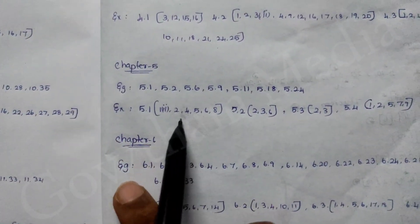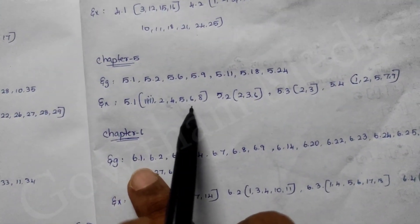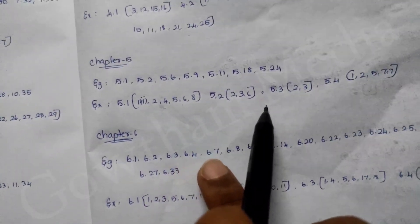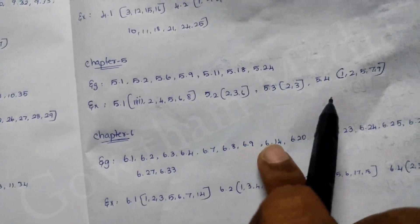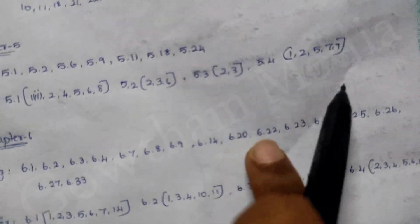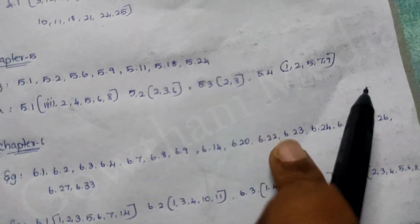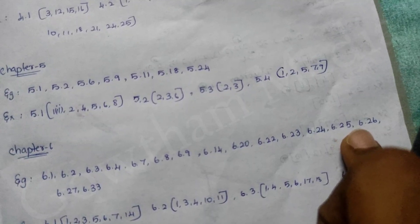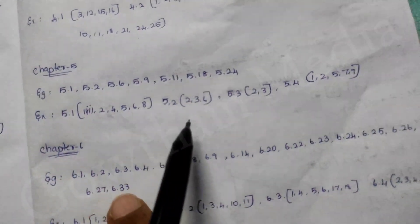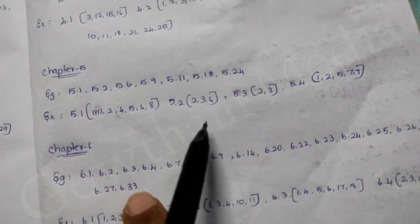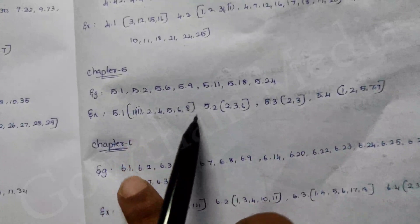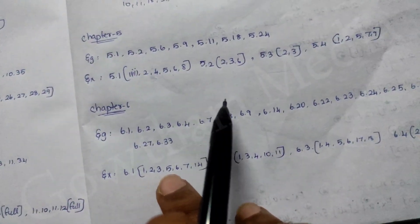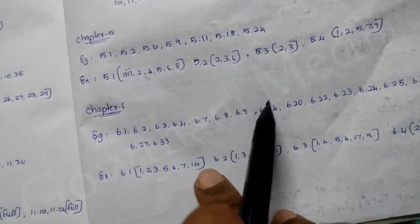Chapter 6. Examples: 6.1, 6.2, 6.3, 6.4, 6.7, 6.8, 6.9, 6.14, 6.12, 6.20, 22, 6.23, 6.24, 6.25, 6.26, 6.27, 6.33. Exercise 6.1 — 1st sum, 2nd sum, 3rd, 5th, 6th, 7th, 14th.